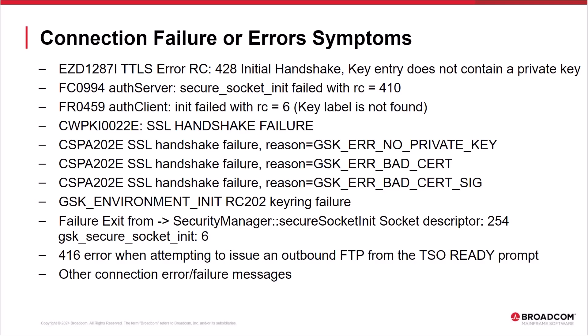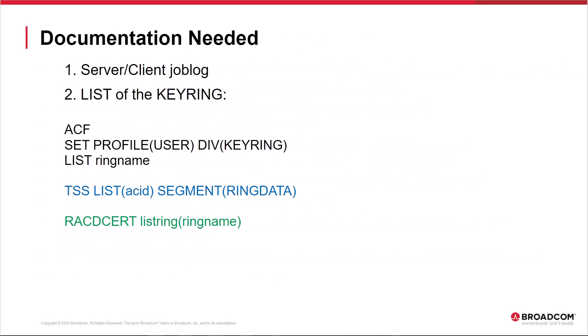The next common type of problem that sites experience after setting up key ring and certificates is client-server connection failures. Here are some of the possible messages related to connection failures for different SSL applications. As you can see, some messages provide a reason for the connection failure and other messages do not provide details on the cause of the failure. Several different key ring and certificate configuration issues can cause SSL connection failure. Next we will look at the documentation needed to identify the cause of an SSL connection failure.